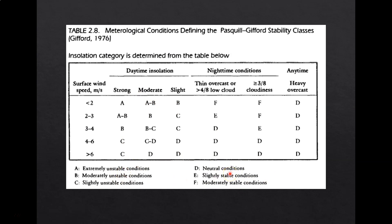The six stability classes include three unstable classes: class A for extremely unstable, class B for moderately unstable, and class C for slightly unstable. Class D is the neutral condition. Classes E and F are stable conditions, where E is slightly stable and F is moderately stable. So in total you have three unstable conditions, one neutral condition, and two stable conditions — six stability classes A, B, C, D, E, and F. In this table you can correlate the stability classes with wind speed and the conditions of that day.